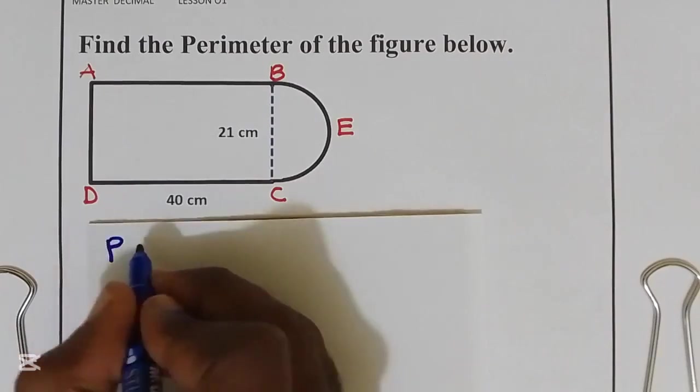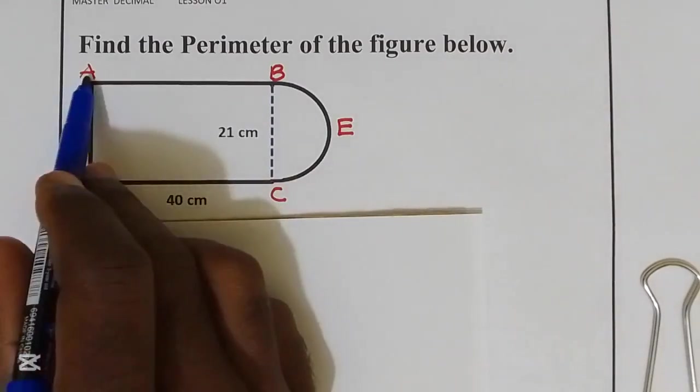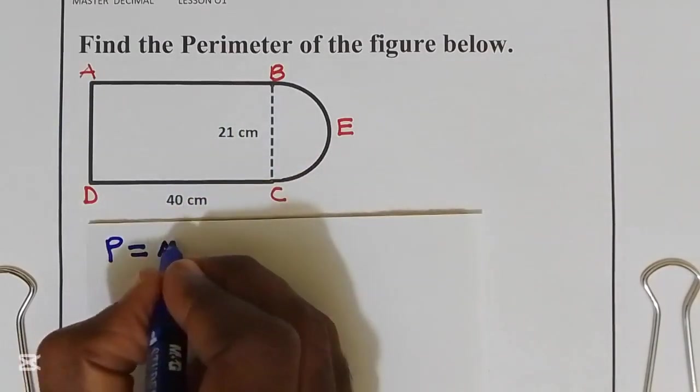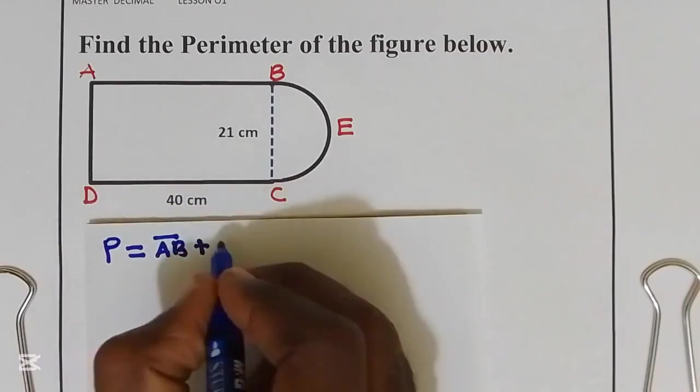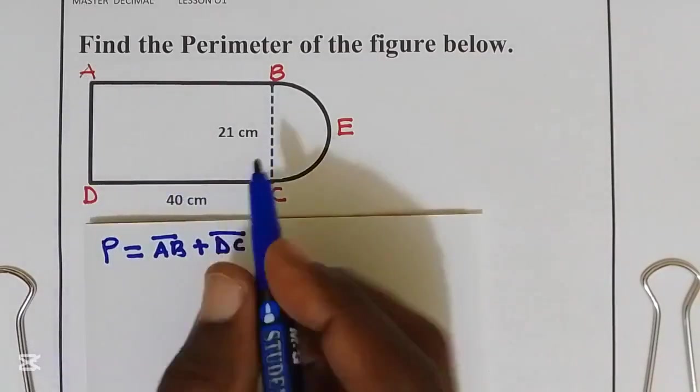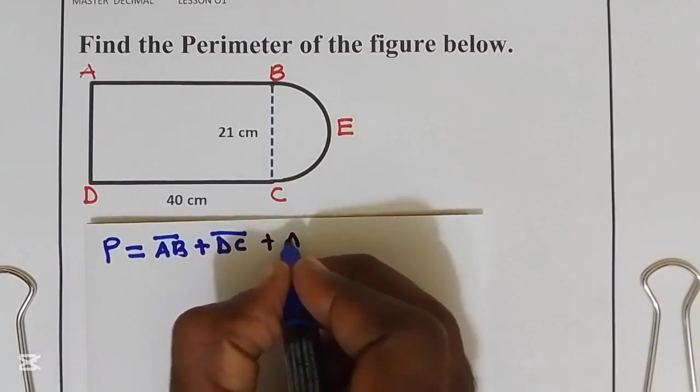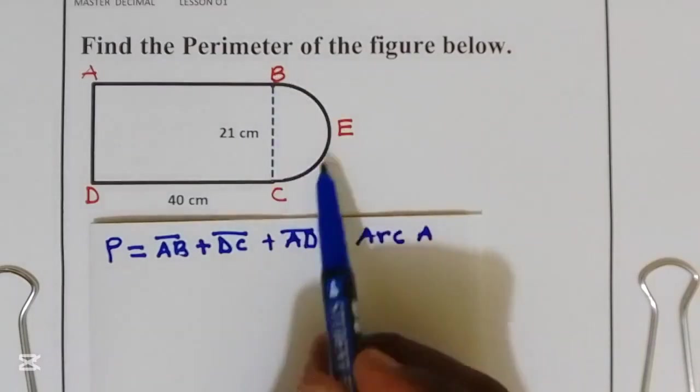Now perimeter is equal to the sum of distance AB plus distance BC plus distance AD plus arc BEC.